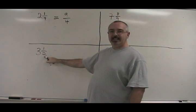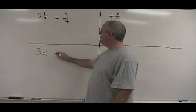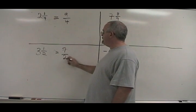3 times 2 is 6, plus 1 is 7. The denominator stays the same.